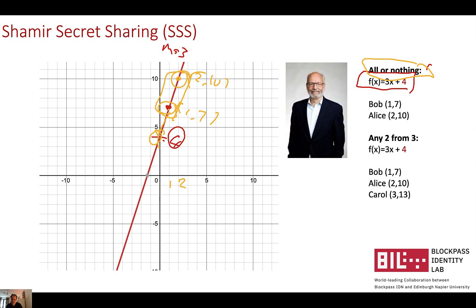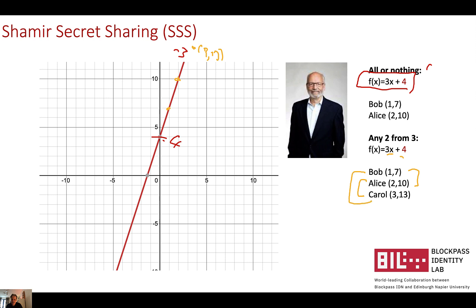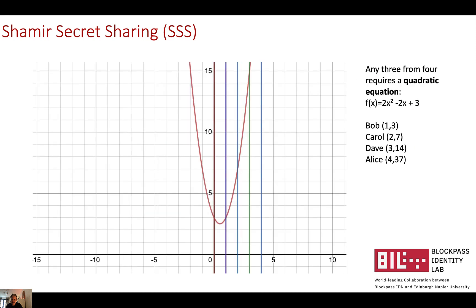We can build resilience into this by defining any two from three. We take the same equation but define points for Bob, Alice, and Carol at (3,13). Any two from three can come together to recreate the equation, giving us resilience so that we could lose one of the shares and still be able to recover the secret. For three from four, we define this as n-from-m, where m is the number of shares and t is the minimum threshold required for the shares to recreate the secret.